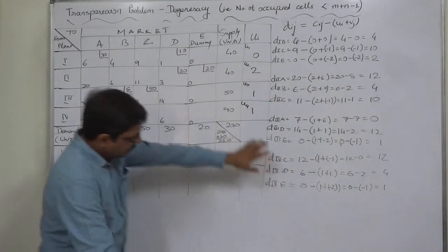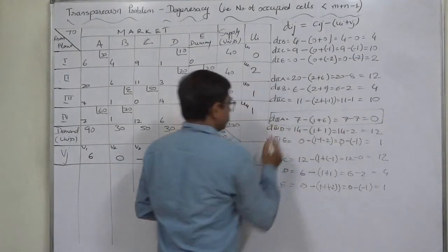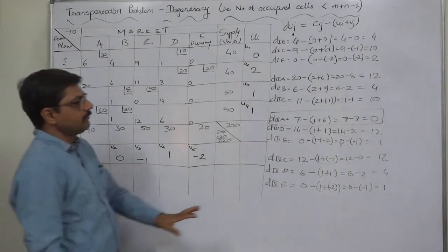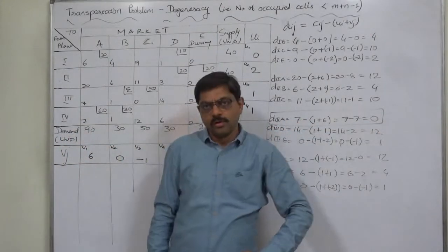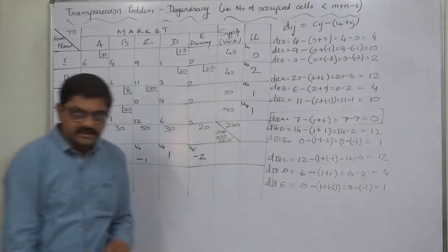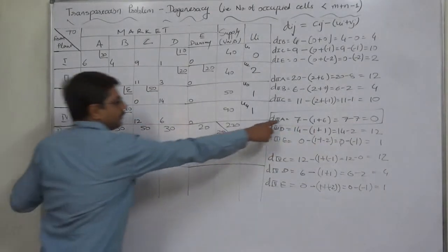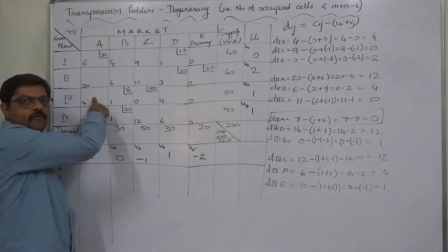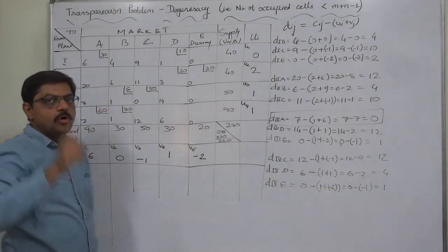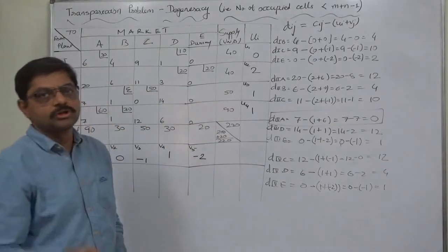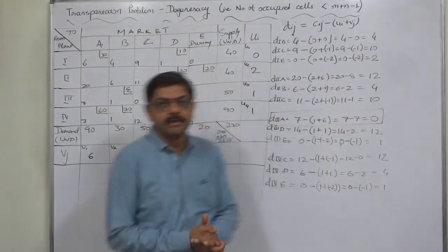Since there are no negative DIJ values, this is the optimal solution. However, this is not the unique optimal solution — it is one of multiple optimal solutions. Because one of the DIJ values is 0 (for cell 3A), a DIJ value of 0 indicates that if we create a closed loop from that cell and reallocate, we can obtain another optimal solution, but the total transportation cost will not change. So this is one of the multiple optimal solutions.